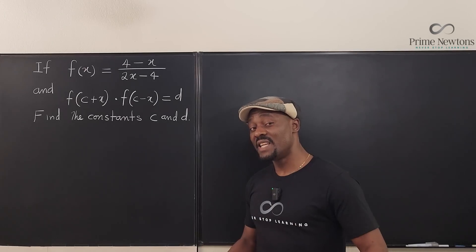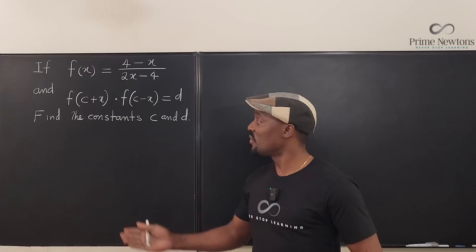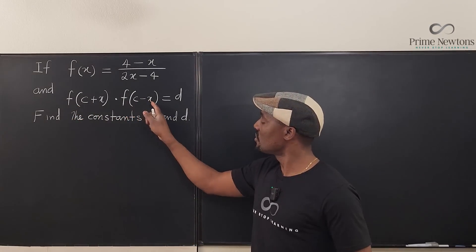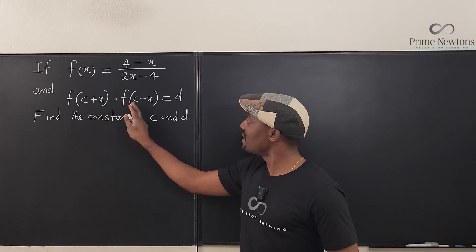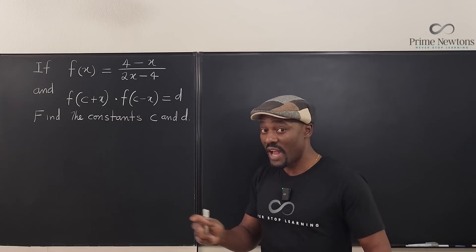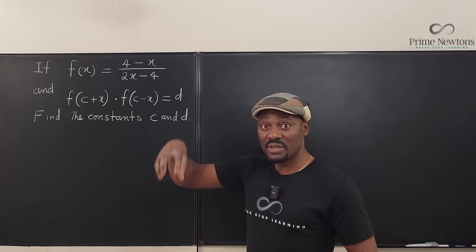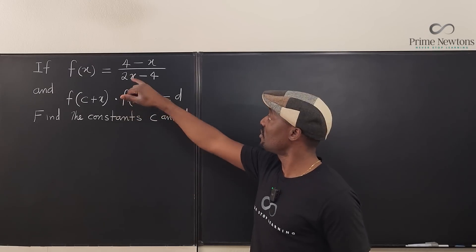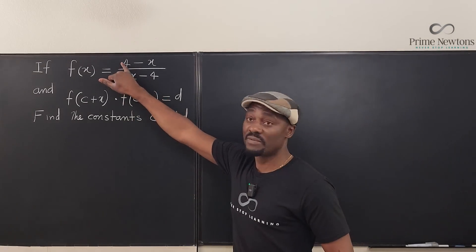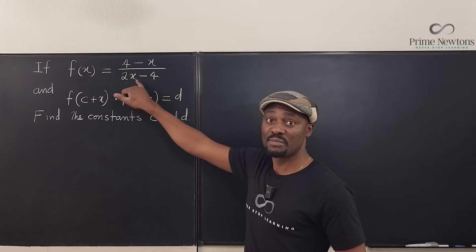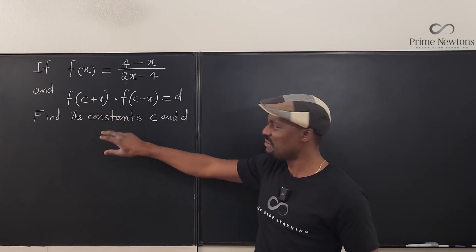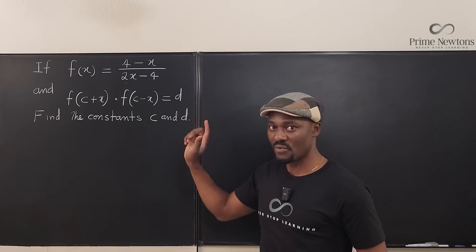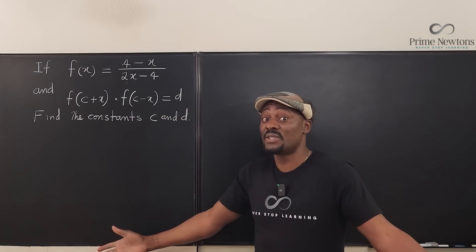My first strategy is to see what happens when I compute f(c plus x) and f(c minus x). All I know is what f does to its input: it subtracts the input from 4 and then divides the result by 2 times the input minus 4. So if I do the same thing to (c plus x) and (c minus x) and multiply them together, I should get d — maybe something beautiful is going to show up.